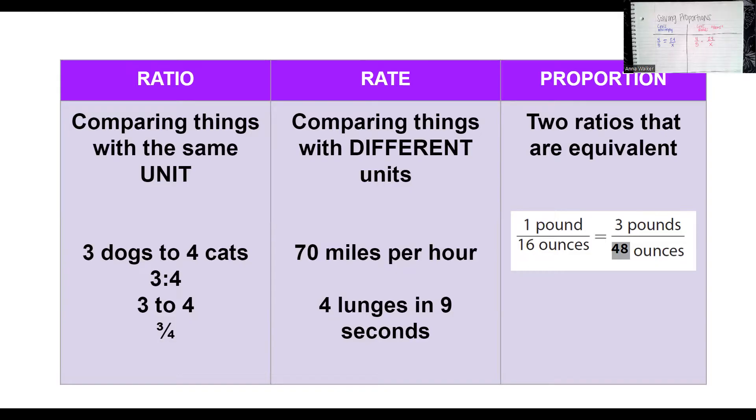So when we're given a particular rate or ratio and we're trying to compare it to a similar rate or ratio, like for example, if there are three dogs to four cats in the shelter, what if there are 16 cats, how many dogs are there? That would be a question of solving a proportion. So if one pound is 16 ounces, well, then how many ounces are in three pounds?